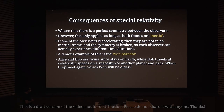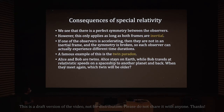A famous example is the twin paradox. In this paradox, Alice and Bob are twins — presumably the same age to begin with. Alice stays on Earth while Bob travels at relativistic speeds on a spaceship to another planet and then comes back. The question is: when they meet again, which twin will be older?